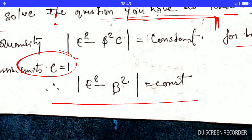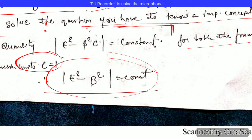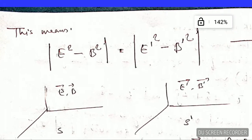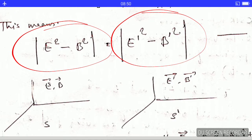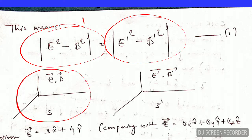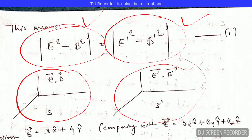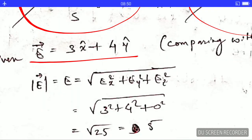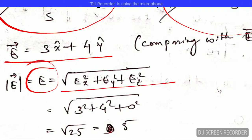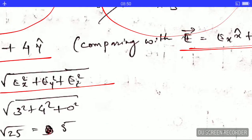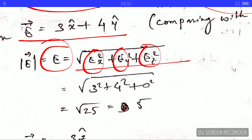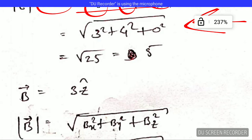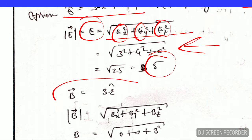Since this quantity is constant, whether we are in frame S or frame S prime, the value must be equal in both frames. The question gives the electric field vector E in frame S. Using vector algebra, the magnitude of E is calculated from its components EX, EY, and EZ. Plugging in the given values, we get the magnitude of E equals 5.